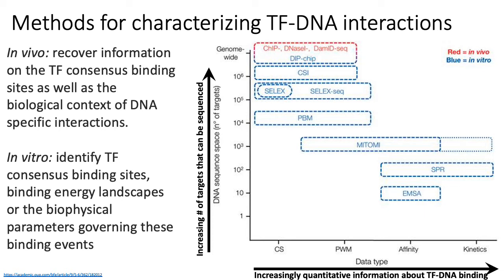In terms of in vitro methods, today we'll primarily talk about SELEX-seq and protein-binding microarrays, though it's worth noting there are other methods that give reasonable throughput, like mesotheresis, that we won't cover. We'll also briefly mention electrophoretic mobility shift assays, because those are the most historic methods used to characterize TF-DNA interactions.